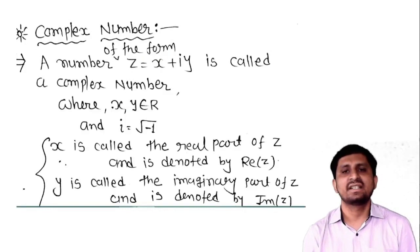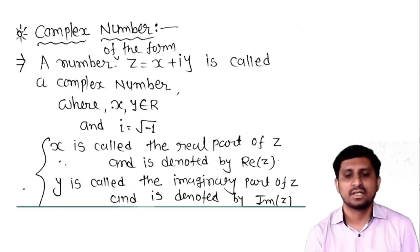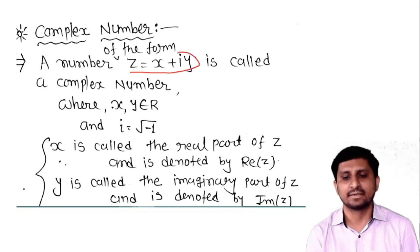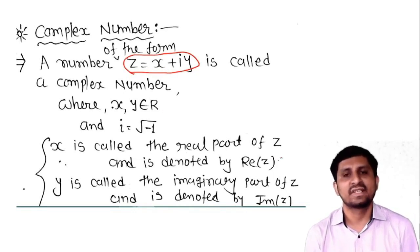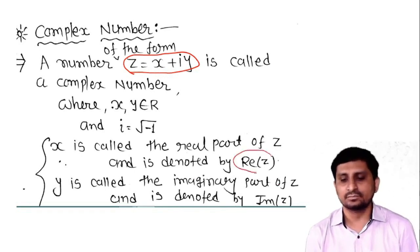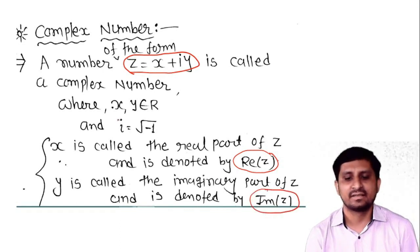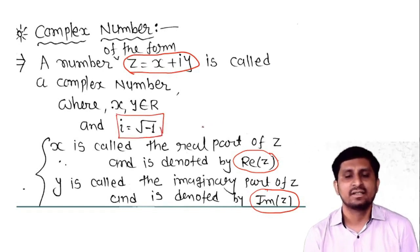The first basic concept is the definition of a complex number. A number of the form z = x + iy is called a complex number, where x and y are both real numbers. x is called the real part of z and y is called the imaginary part of z. We use the notation Re(z) for x and Im(z) for y. Here i is nothing but the square root of minus 1.